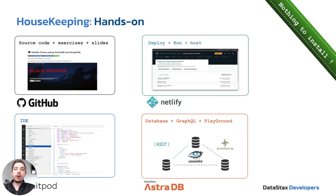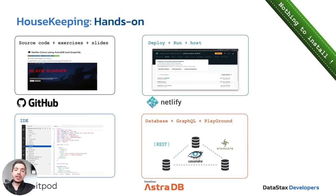And finally, for our database to manage our big data, we're going to be using AstroDB. AstroDB is a database-as-a-service built on the Apache Cassandra project. It has a lot of really cool features, including a data layer that we call Stargate, which is going to expose our database through various different APIs, including REST, GraphQL, and Document APIs. And we'll be using GraphQL today.